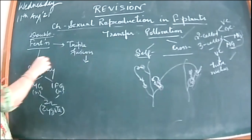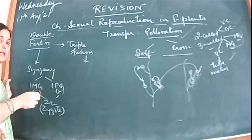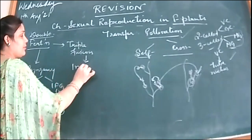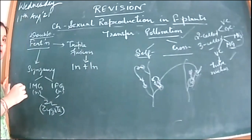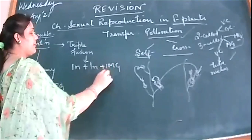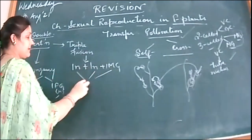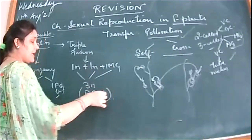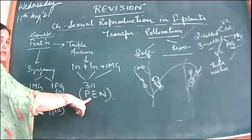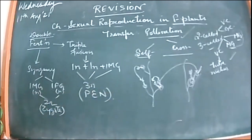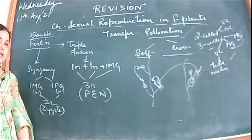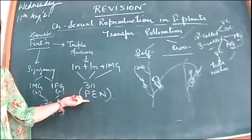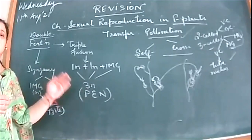Triple fusion is when two nuclei of the polar cell — the central cell — plus one male gamete come together. There are two polar nuclei, and together with one male gamete, these three nuclei fuse together, forming a triploid structure called the primary endosperm nucleus, or PEN. After their formation, all the other cells — seven cells, eight nucleated — the synergids and antipodals — they degenerate. The zygote becomes dormant, undergoes a resting phase, so that the PEN, which is a single nucleus, undergoes several cleavages forming the endosperm.